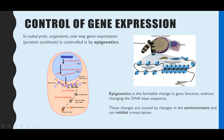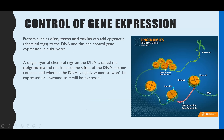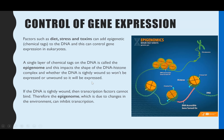Some of the environmental factors that can cause these changes include your diet, stress, and any toxins you might be exposed to. All of those can either add or remove certain chemicals — which we call chemical tags — onto your DNA or onto the histones that the DNA wraps around. That single layer of chemical tags that everyone has around their DNA is called the epigenome.